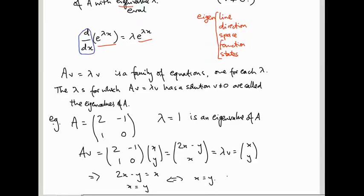So the solutions of this equation, or the eigenvectors for this eigenvalue, are all the vectors of the form (x,x), in other words with the x and y components the same.